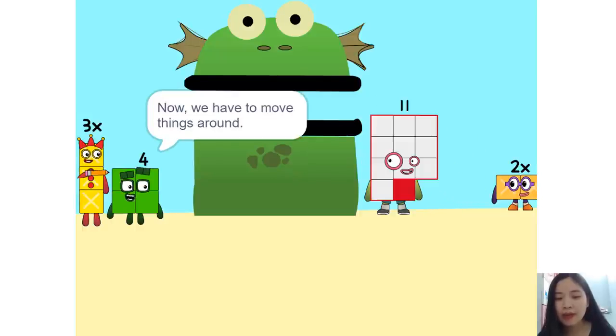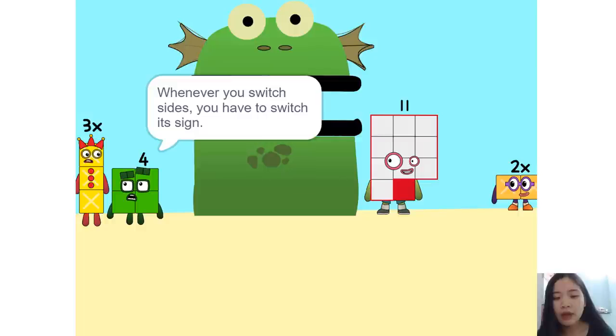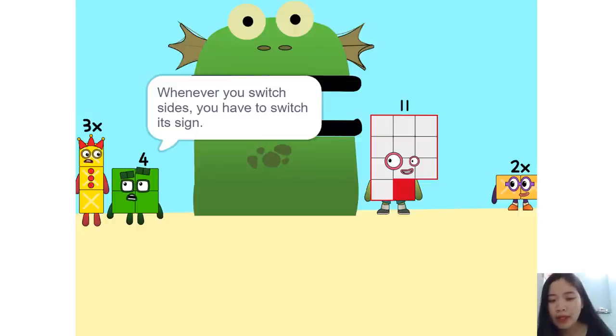Now we have to move things around. We have to move this 2x to this side. So 5x. Whenever you switch sides, you have to switch its sign. So if it's positive, it becomes negative and vice versa.